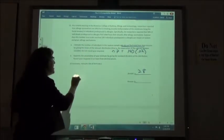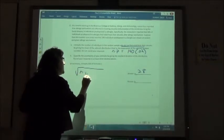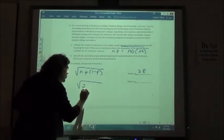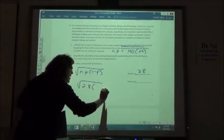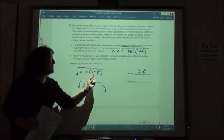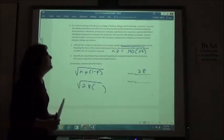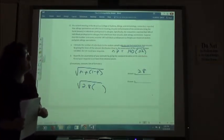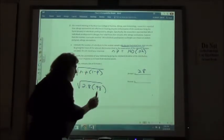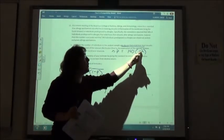We're then going to find the standard deviation, n times p times 1 minus p. So n times p was our 2.8. And what number are we going to use for the 1 minus p? Where did you get that number from? What number is going to go in here for the 1 minus p? .98, right? If this was 2 percent, then this is 98 percent. 1 minus 2 percent is 98 percent.